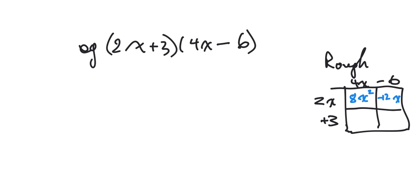Do the same thing for positive 3 and 4x, and you get positive 12x. Positive 3 times negative 6 is negative 18. So now we just write our final solution.